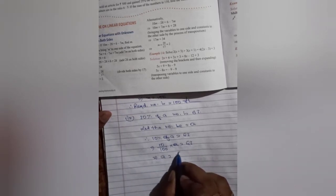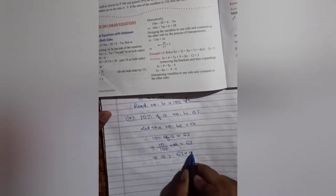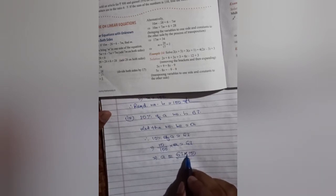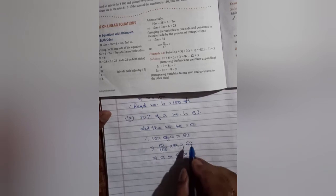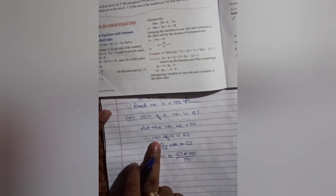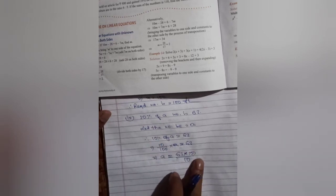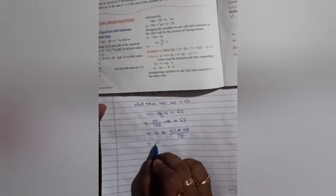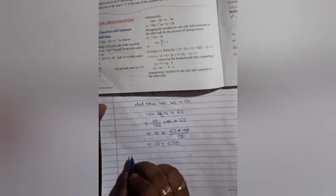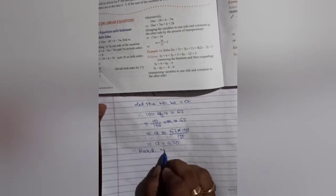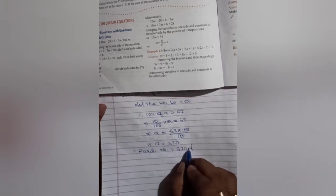Now a is equal to 63 into 100 by 10. How? We know that denominator in the left side will become numerator in the right side. It will become numerator, and numerator in the left side will become denominator in the right side. So a is equal to 630. Required number is 630.